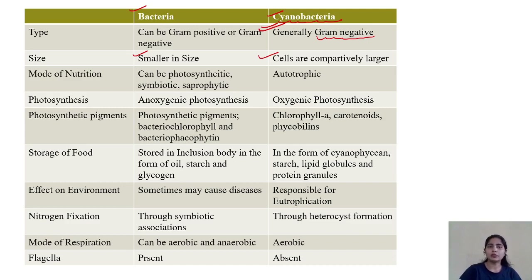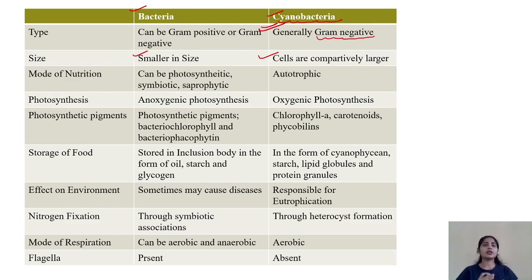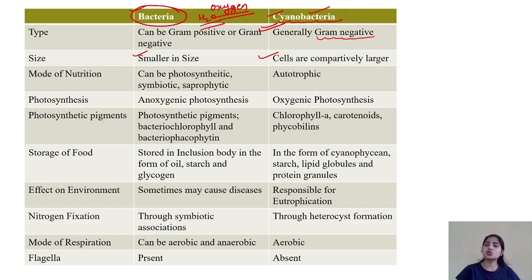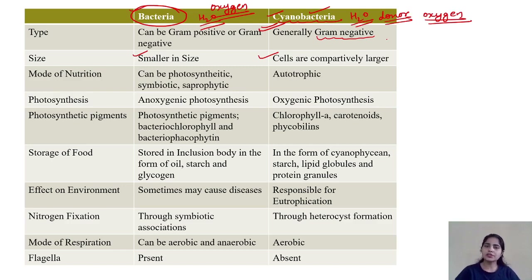It is important to remember that eubacteria are not all photosynthetic. If there are photosynthetic bacteria, they are anoxygenic — they do not produce oxygen. From an evolutionary perspective, early Earth had a reduced atmosphere with no oxygen. Photosynthetic bacteria did not use water as an electron donor. But cyanobacteria were the first organisms to use water as a donor molecule, releasing oxygen, and thereby converting the reducing environment into an oxidizing environment.